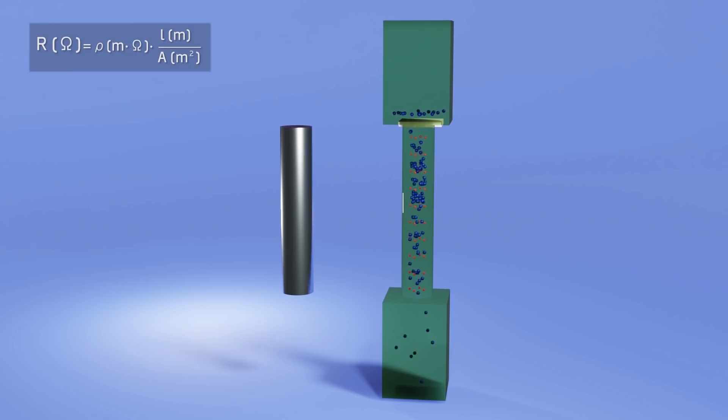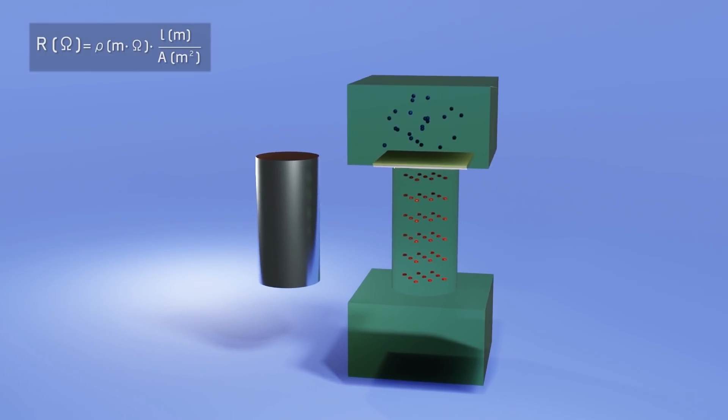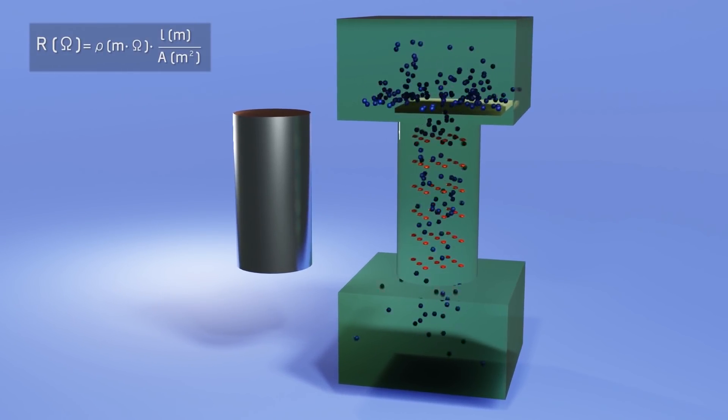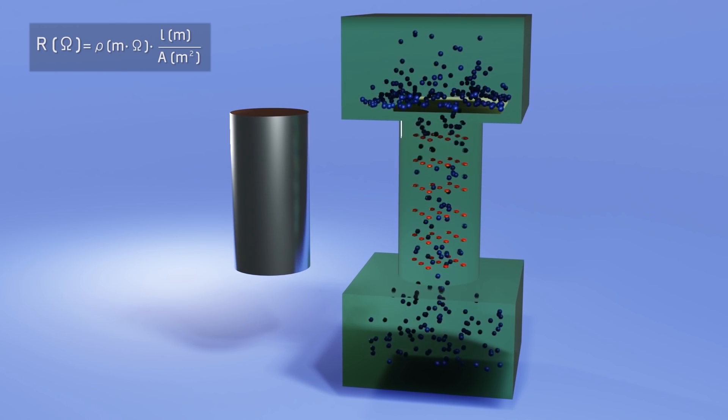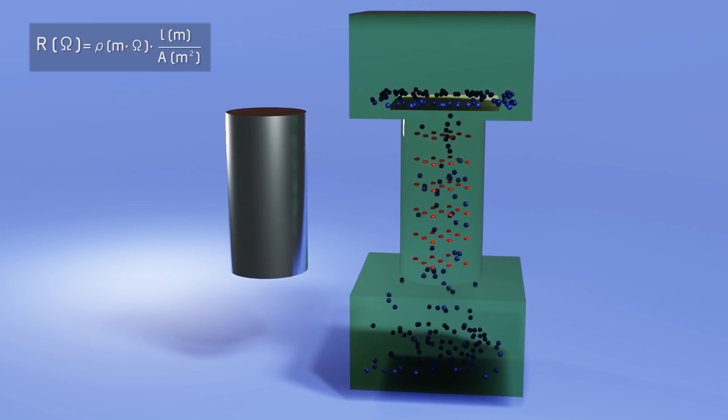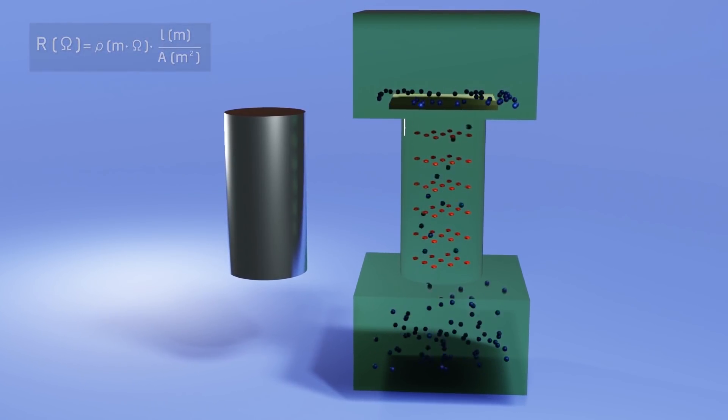On the other hand, if we increase the diameter of the pipe, even when the resistivity coefficient continues to affect the entire volume, there are going to be more possible ways for the electrons to pass. In other words, the greater the cross-sectional area of the cable, there is less resistance to the passage of the current.